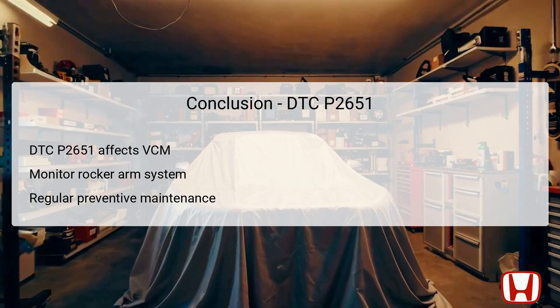In conclusion, DTC P2651 is an indication of a malfunction within the rocker arm oil pressure switch B and its performance in relation to the VCM system in the Honda Accord 2012–2017. Effective troubleshooting involves understanding the roles of the affected components and following a methodical diagnostic approach. The symptoms associated with this DTC can greatly impact vehicle performance, making prompt diagnosis and repair essential. Regular maintenance practices such as changing the engine oil and monitoring operating conditions can assist in preventing such issues from reoccurring.